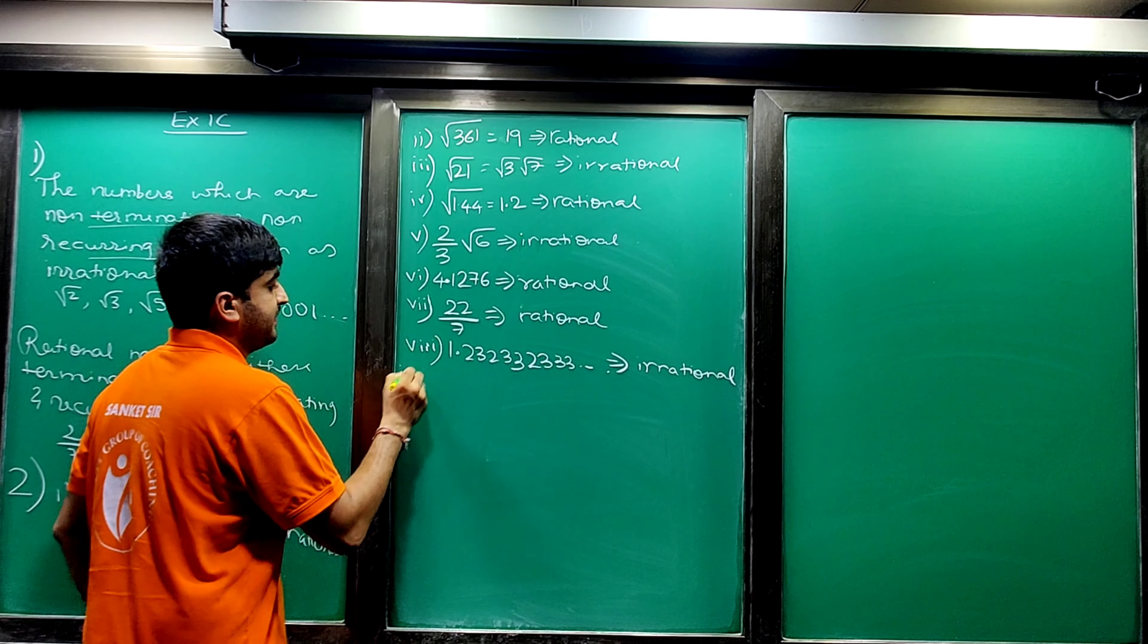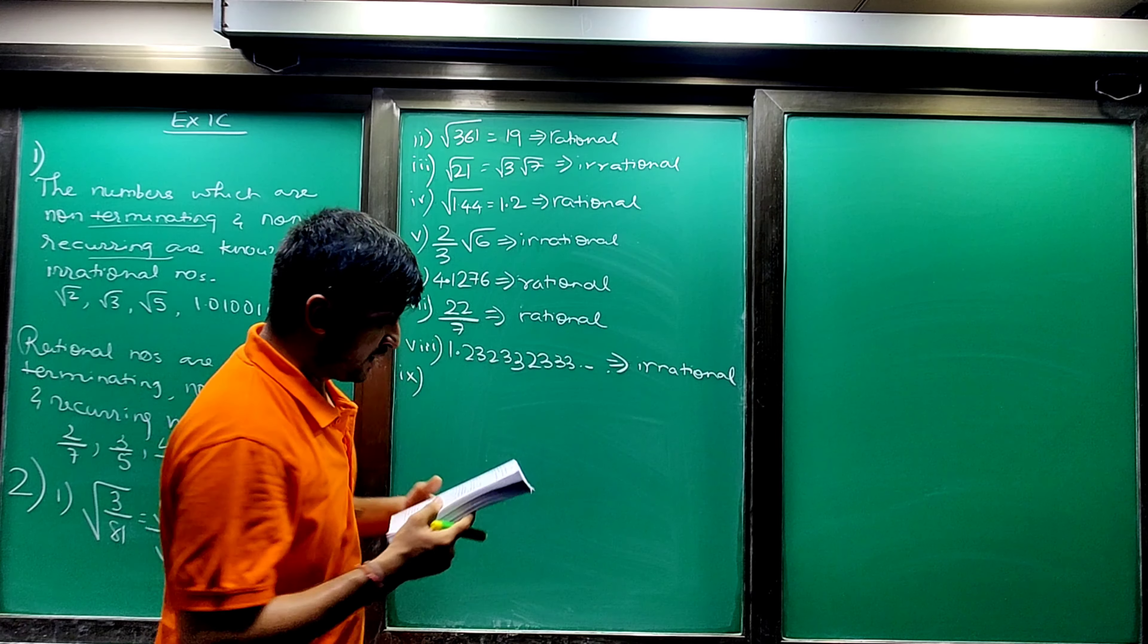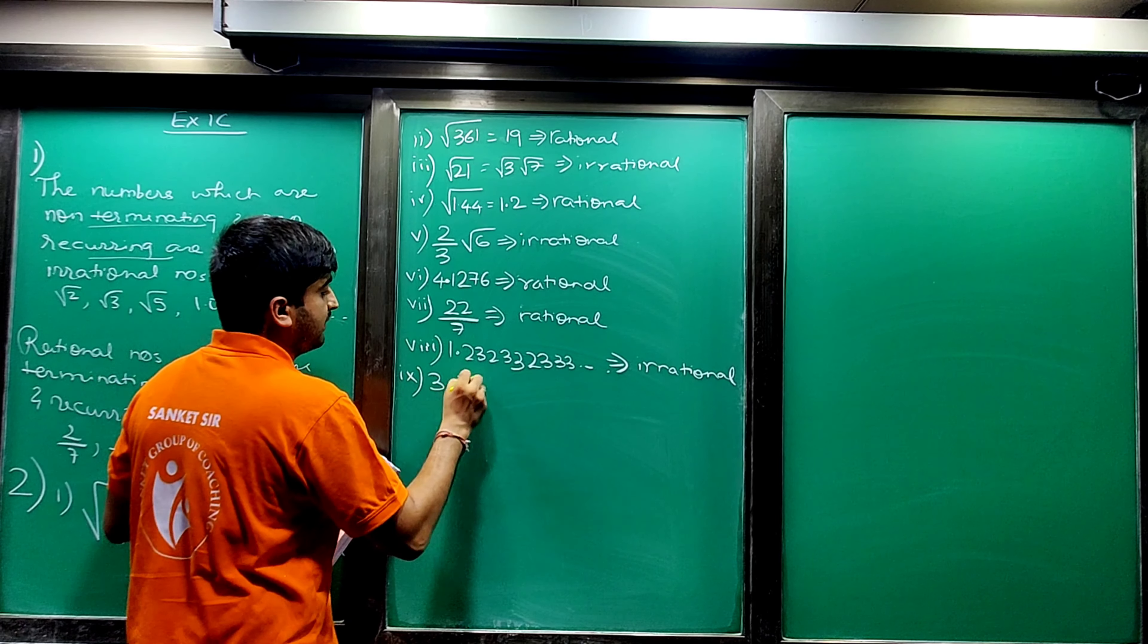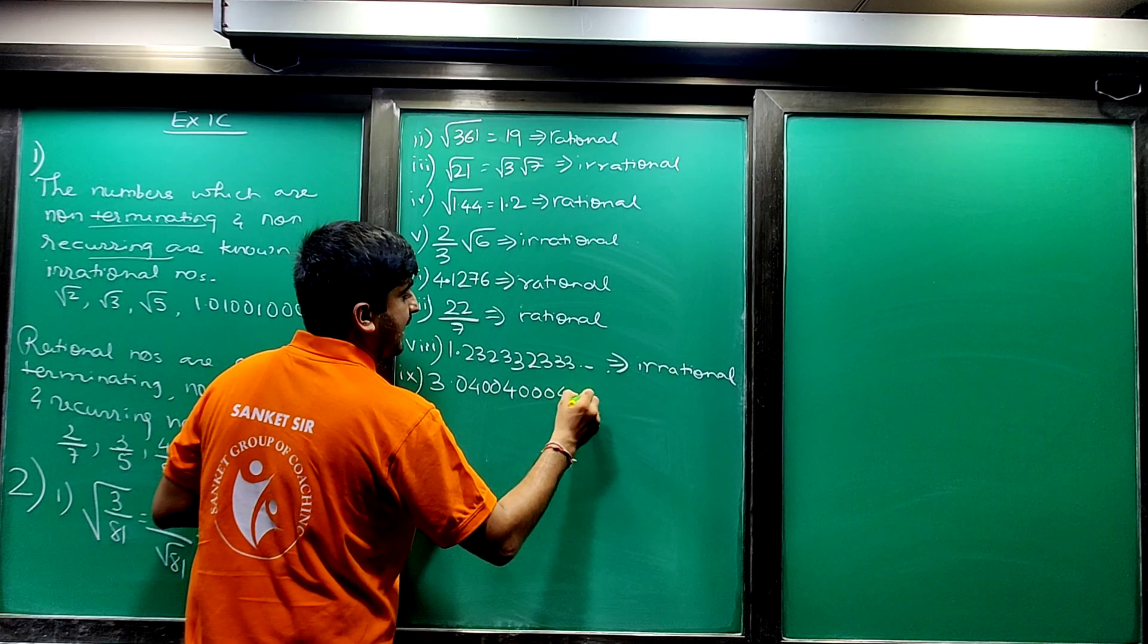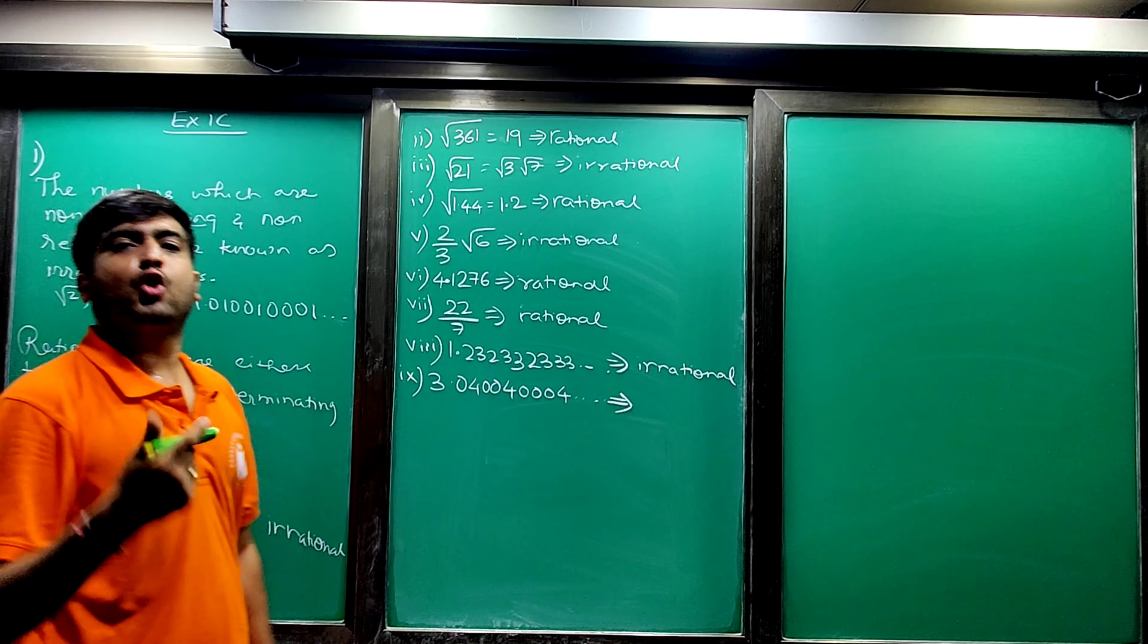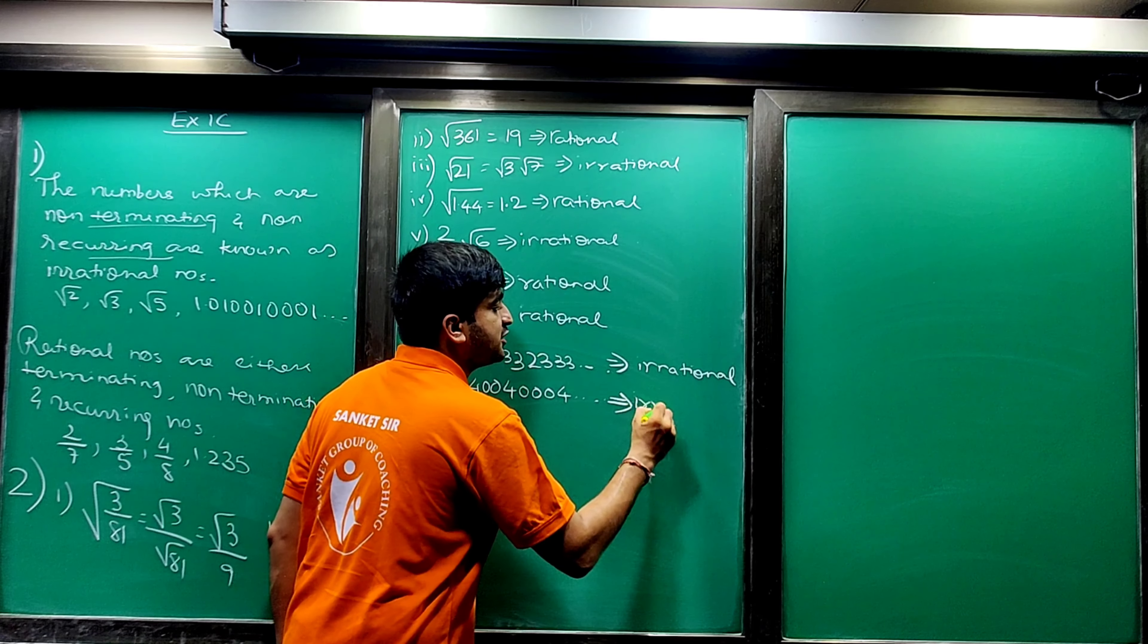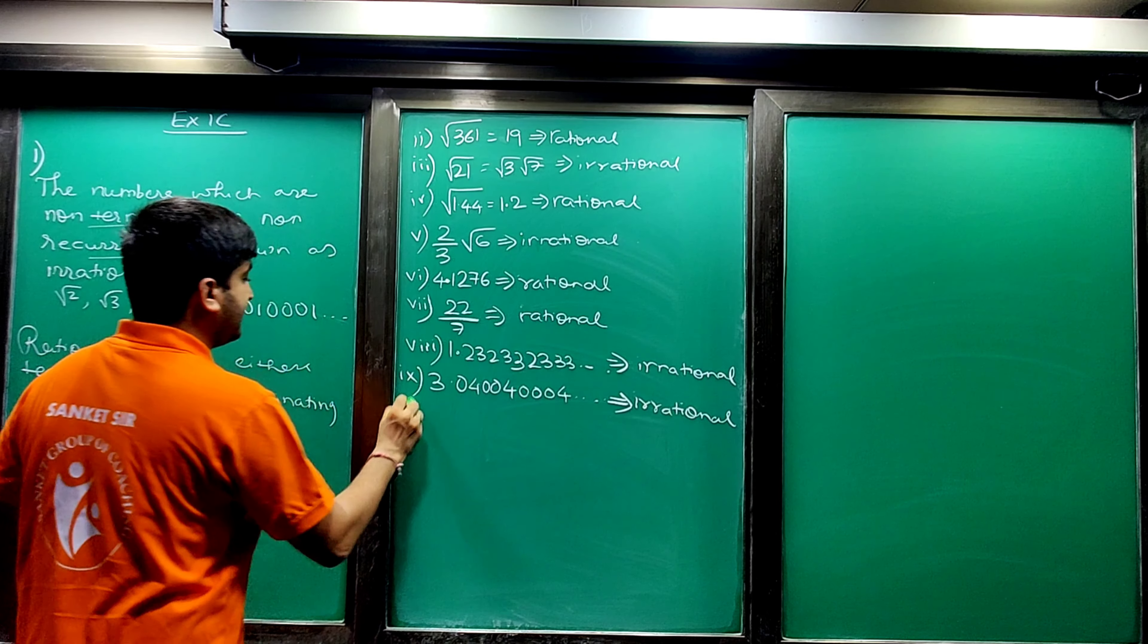Next is ninth: 3.04, double zero four, triple zero four and so on. How is this number? Non-terminating and non-recurring, and hence it is your irrational number.